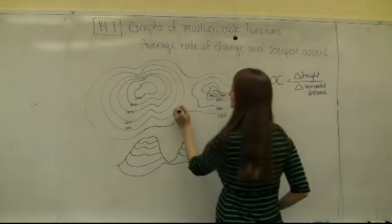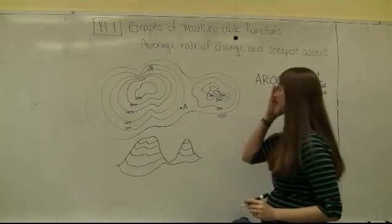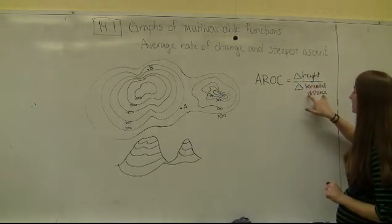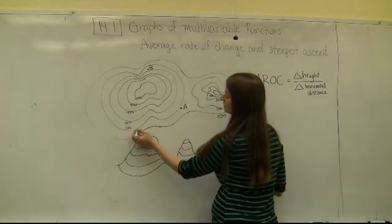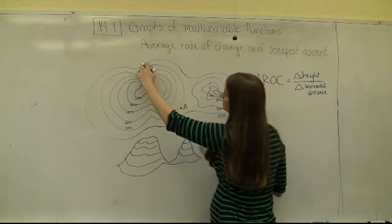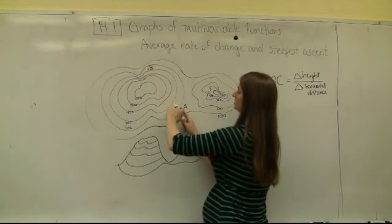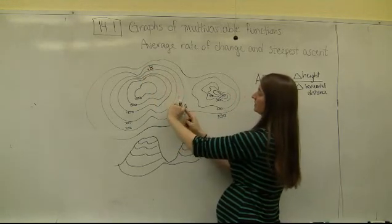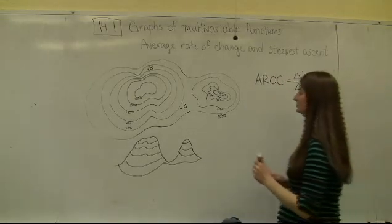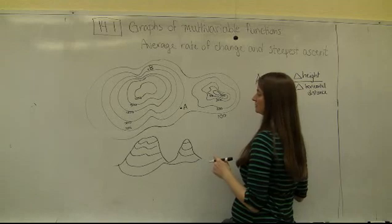For example, if I'm at some point A and want to know the average rate of change going to point B, I want the change in altitude divided by the change in horizontal distance. Point A is very close to the 200 curve, so the height at A is approximately 180. Point B is close to the 300 curve, so the height at B is approximately 280, giving a vertical displacement of 100 units. The horizontal distance is computed using the Pythagorean theorem.